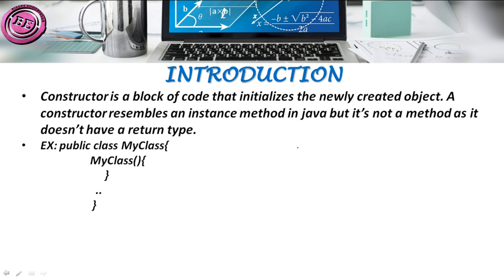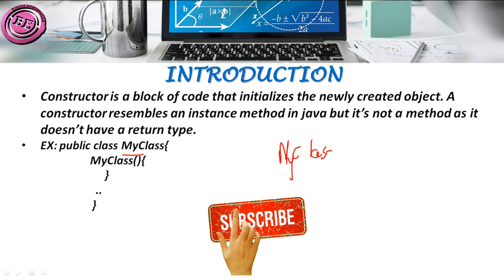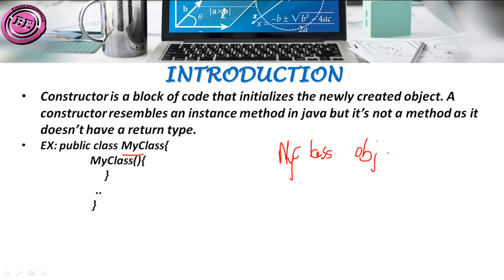What is the syntax for an object? The syntax for an object is: first we declare the class name. Here I consider the class name as MyClass, and the object name as obj. For initializing this object we create a particular method — that method name is known as 'new MyClass()'. This initialization of the object is known as a constructor.